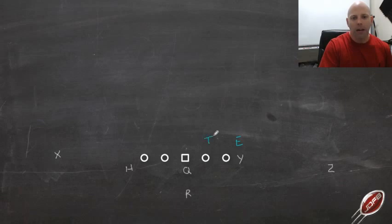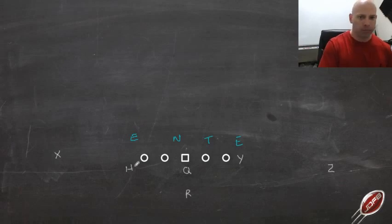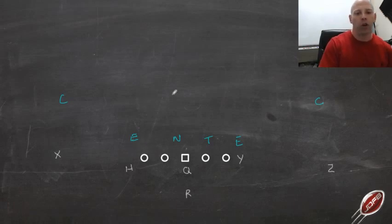We've got our 3-tech tackle and a weak shade or 2-eyed nose — we use them based on game plan. That defensive end in our 4-2-5, depending on the quality of the H-back, may be in a 7 on the H-back or in a 5 on the offensive tackle. If there's a tight end on the ball, he's going to be in a 7-technique inside shade. I'll talk about those techniques in just a minute.